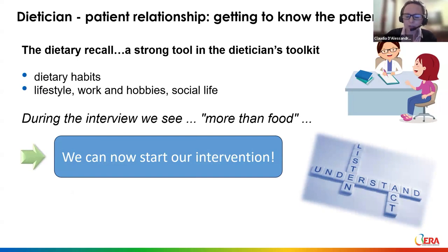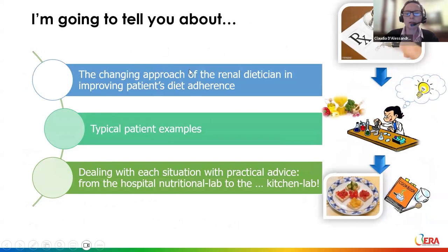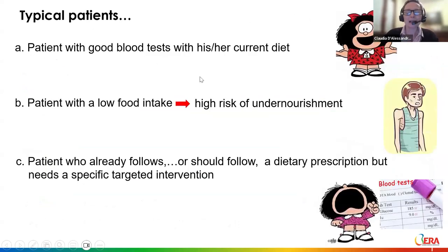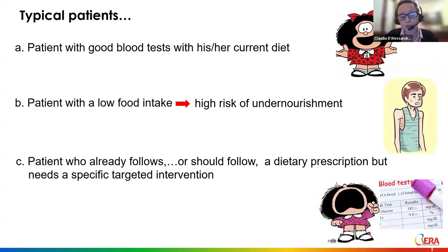Starting from clinical data and evaluation of nutritional status and dietary habits, we can begin our intervention. In my clinic I encounter three typical patient types: patients who come with good blood tests on their current diet; patients with low food intake at high risk of undernourishment; and patients who already follow a dietary prescription but whose adherence is poor and blood tests are not good, requiring a specific targeted intervention.